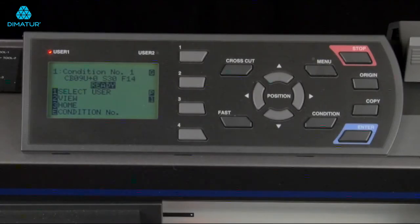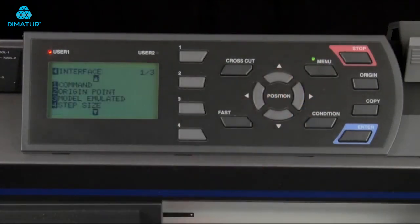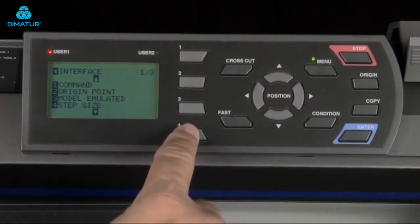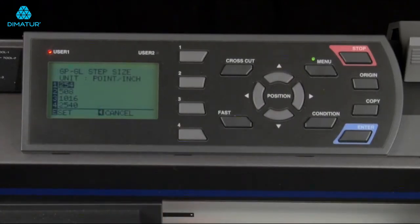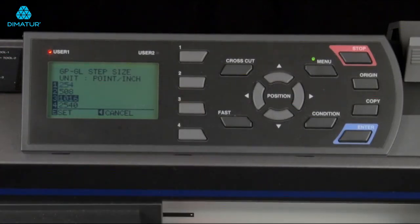If you choose GPGL, you may want to set the step size. Step size is another word for resolution. To get to that menu, press the menu key. Press the up arrow key for I/F, and then press the four key for step size. In this menu, there are four choices. The choice we want is 1016. This will give us good resolution with reasonable speed. Something important to remember is that the resolution set here has to reflect the resolution in the software. Some software applications will automatically set this for you. Refer to your software manual for details, and set it accordingly.